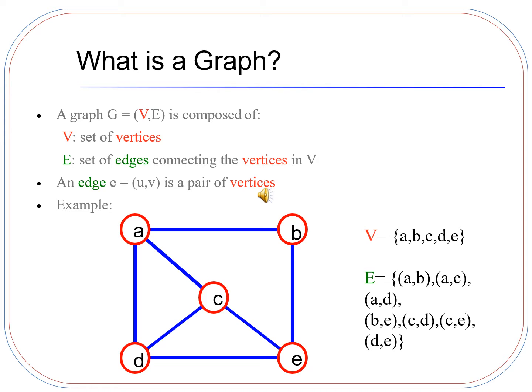The example shown below is of a graph where the set of vertices are A, B, C, D, and E. The pairs of edges connecting these vertices are: A-B, A-C, A-D, B-E, C-D, C-E, and D-E. These are the edges connecting the vertices mentioned in the set of vertices above.